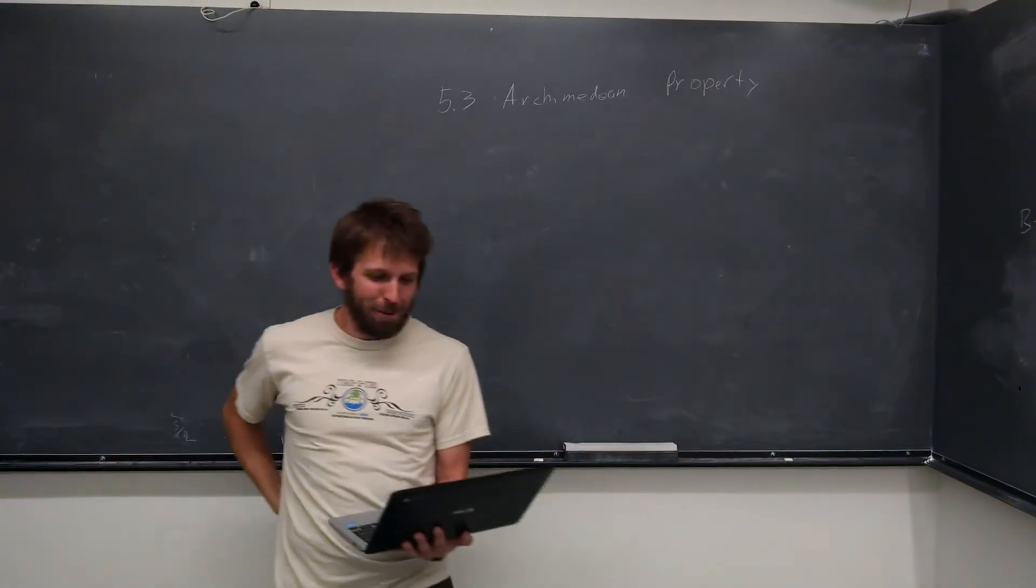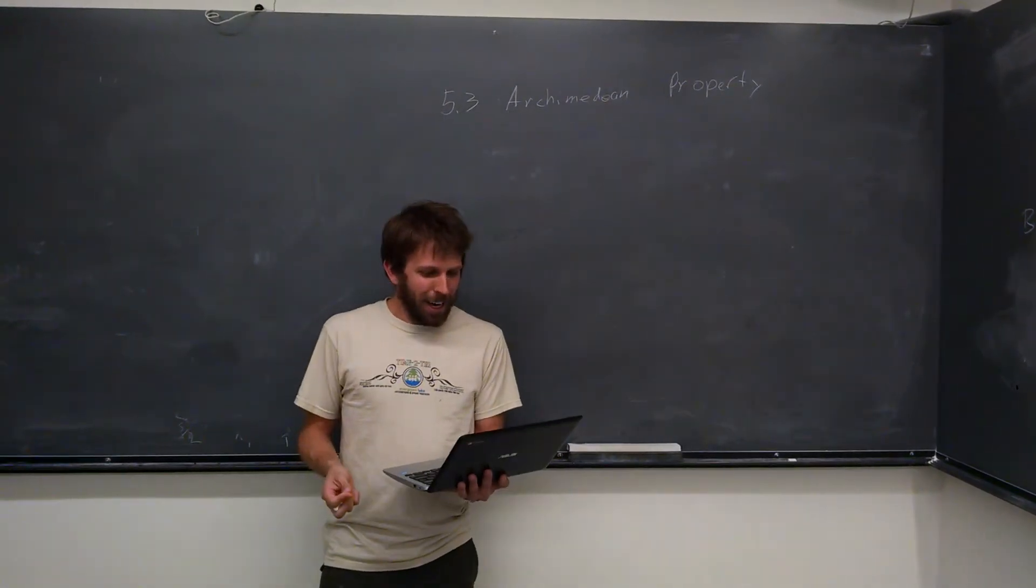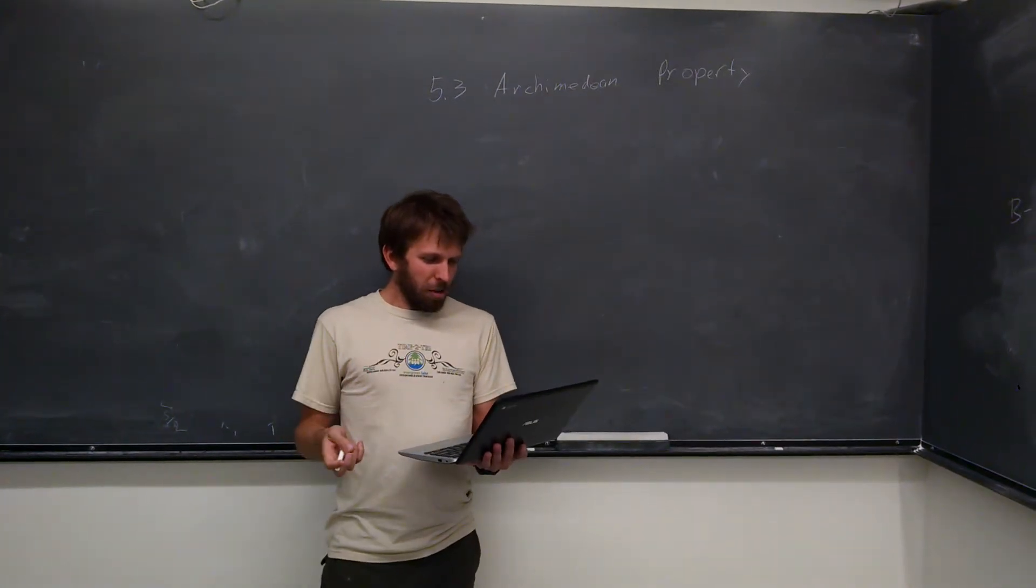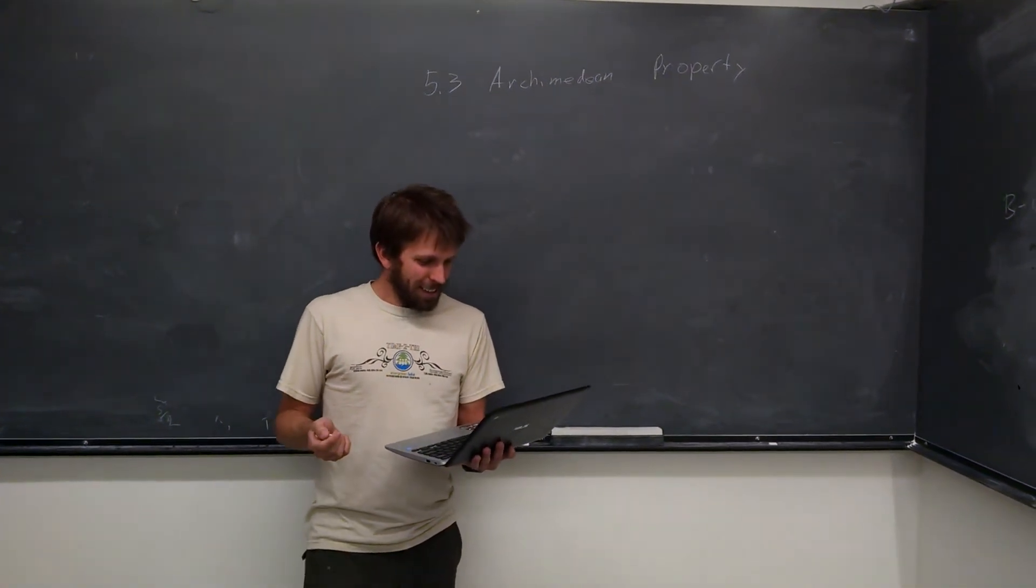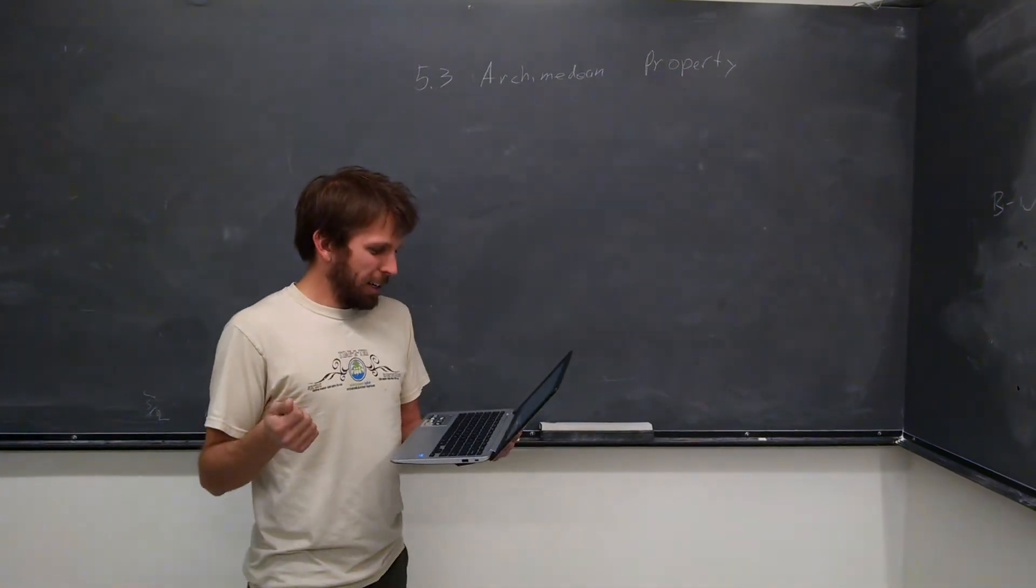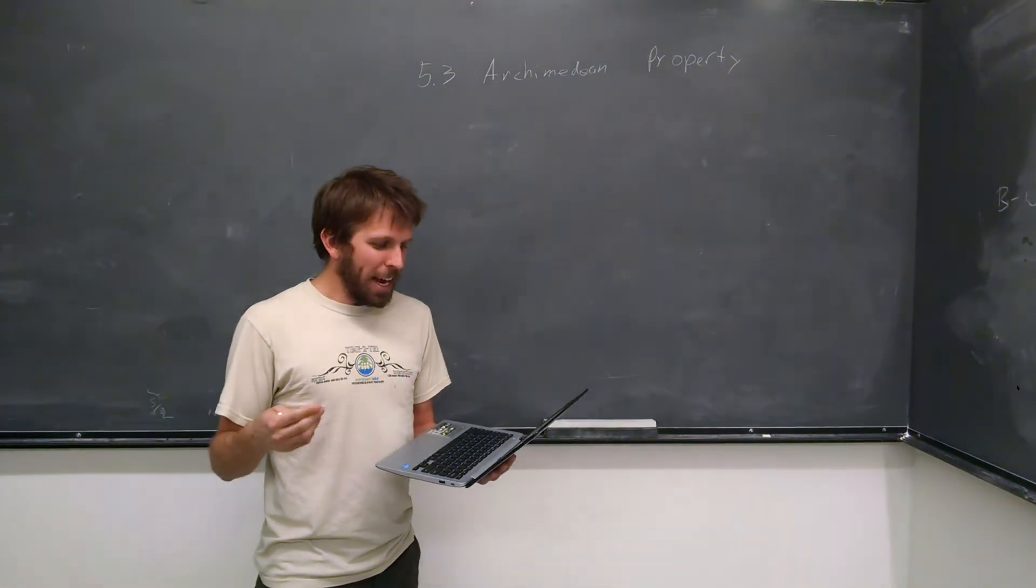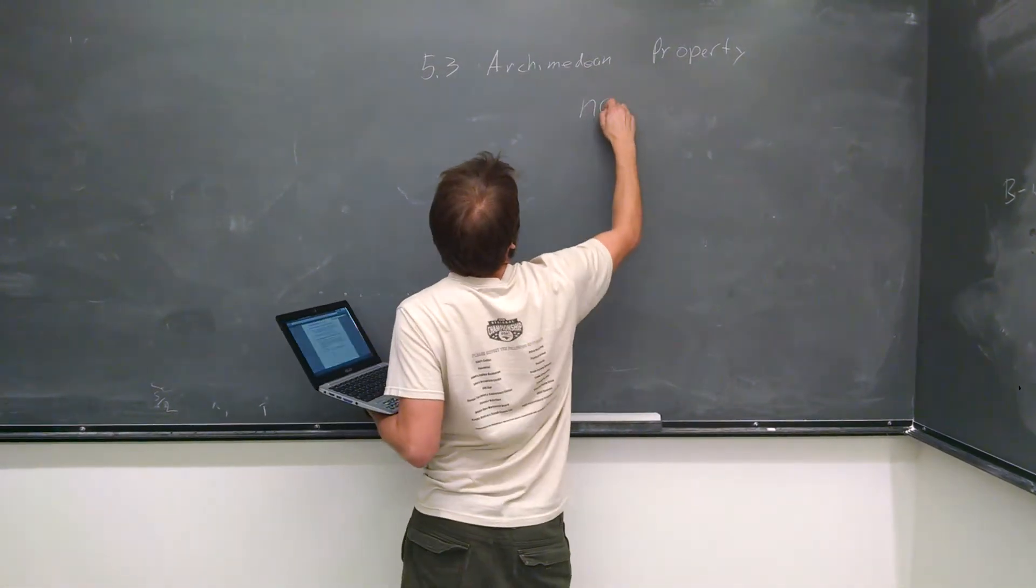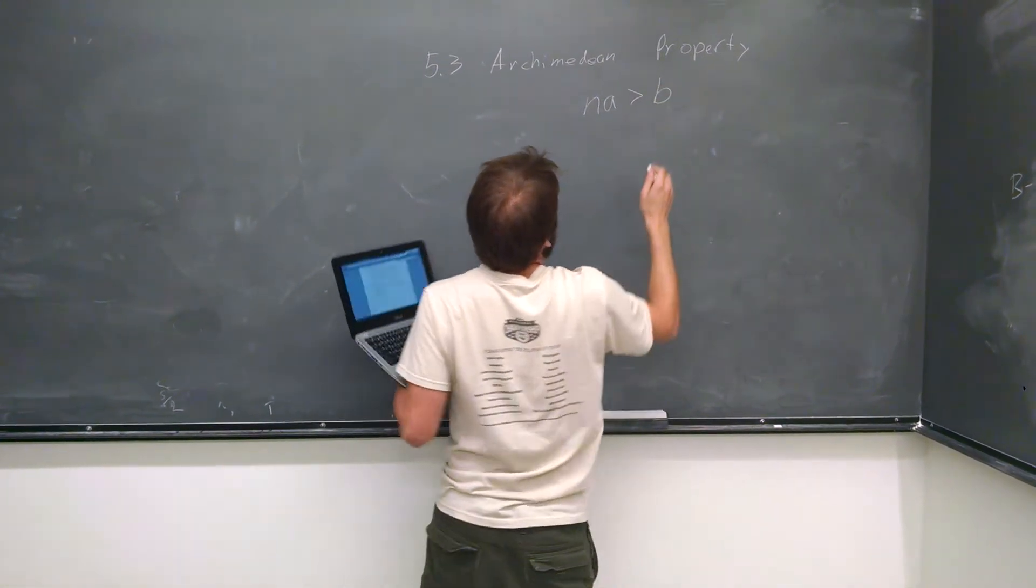I'm in Math 23A, and I'm going to prove the Archimedean property of real numbers. What this says is that for any two positive real numbers A and B, there exists a positive integer N such that N times A is greater than B.